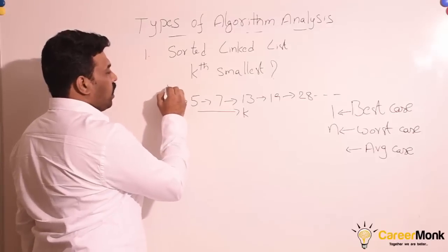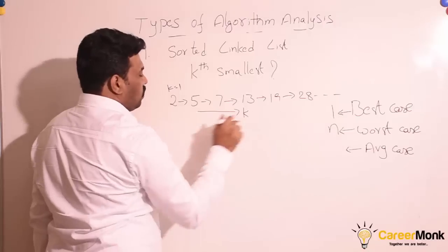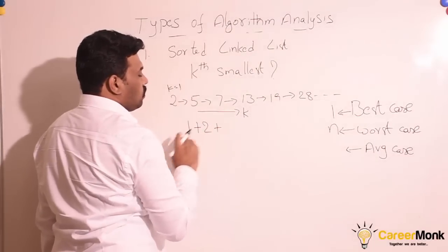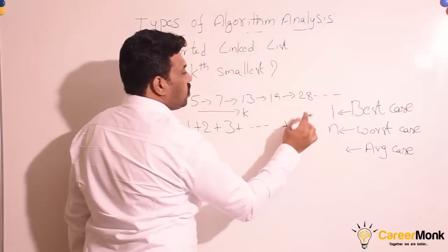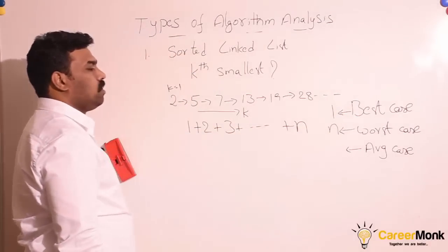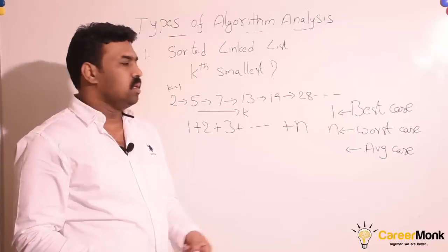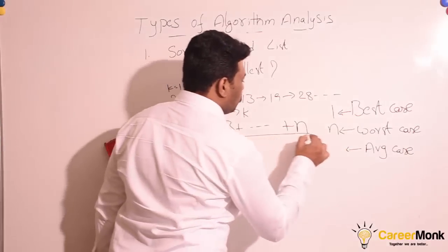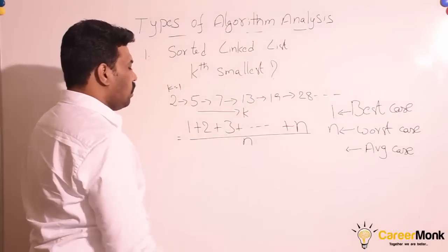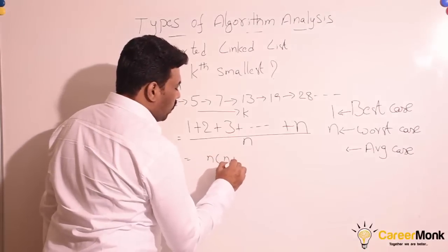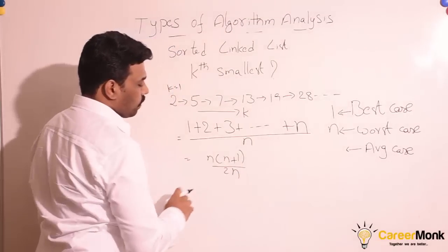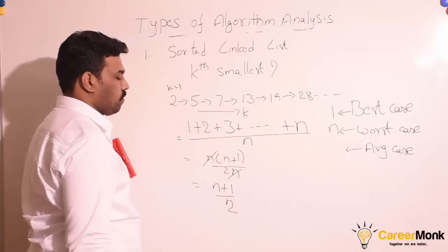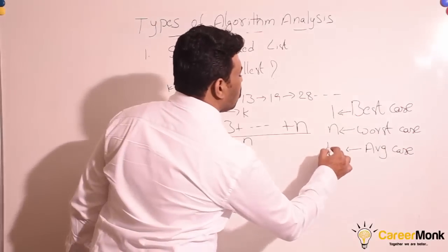For k equal to 1, the running time is 1. For k equal to 2, the running time is 2. For k equal to 3, the running time is 3. Similarly, for k equal to n, the running time is n. For each of the possible inputs we have taken the running times. Since we have performed n such operations, to find the average running time we divide by n. This is a simple summation: n(n+1)/2 divided by n, so the two n's cancel. The average running time is n/2.